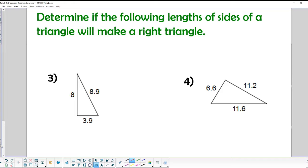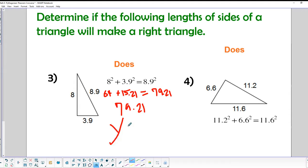So let's try a couple of others. We've got 8 squared, 8.9, and 3.9. So does 8 squared plus 3.9 squared equal 8.9 squared? Well, I know that 8 squared is 64. But what about 3.9 squared? So 3.9 squared, that equals 15.21. And then what does 8.9 squared equal? So 8.9 squared, that equals 79.21. And when I look at these two, if I add them together, sure enough, I get 79.21 on the left side as well. So yes, these do form a right triangle.